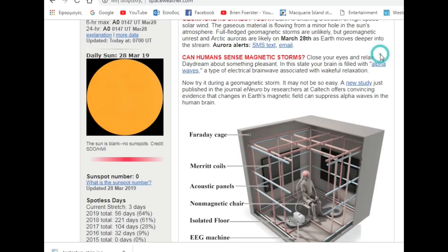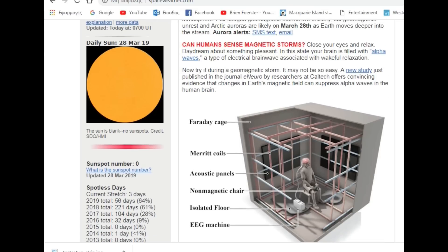Now, can humans sense magnetic storms? Well, I already gave the answer to that. The proof is that yes, they can. Animals as well, and also humans. It says here, close your eyes and relax. Daydream about something pleasant. In this state, your brain is filled with alpha waves, a type of electrical brainwave associated with wakeful relaxation. Now, try it during a geomagnetic storm. It may not be so easy. A new study just published in the journal eNeuro by researchers at Caltech offers convincing evidence that changes in Earth's magnetic field can suppress alpha waves in the human brain. You see, it can suppress the alpha waves, meaning that it makes you more anxious and stressed.